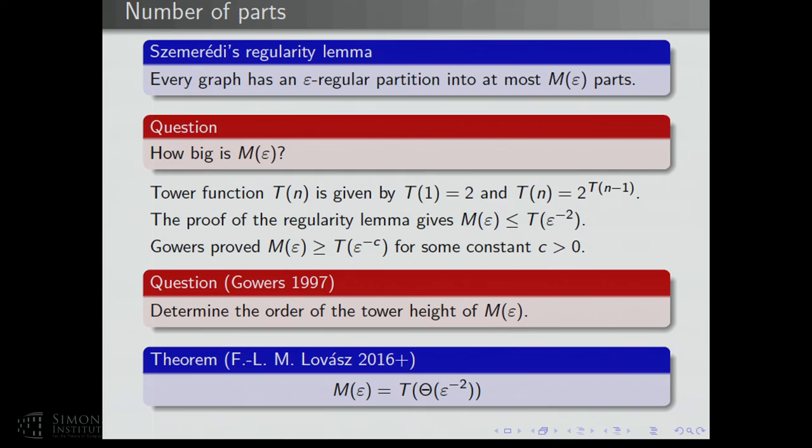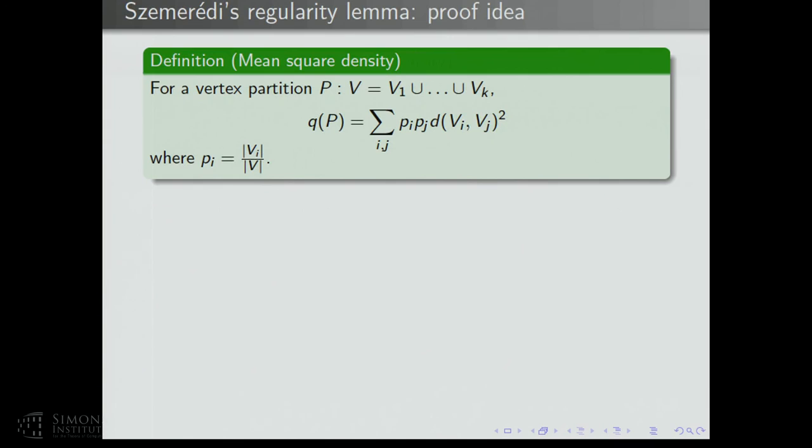The upper bound proof is incredibly natural. When you look at it, it looks like the right proof. What the probabilistic construction shows is that you can reverse-engineer the idea of the upper bound proof and come up with a construction that matches the upper bound.